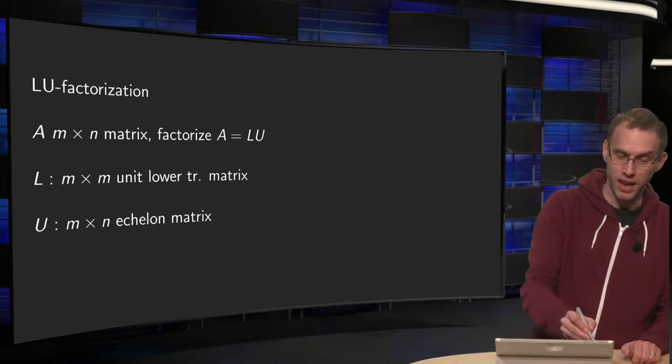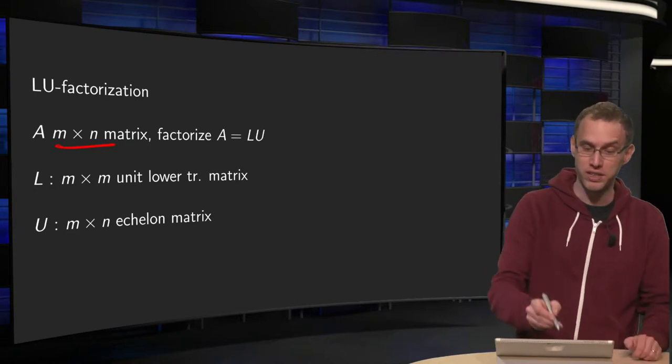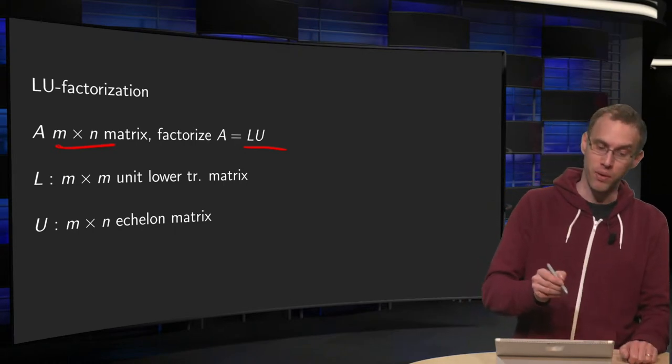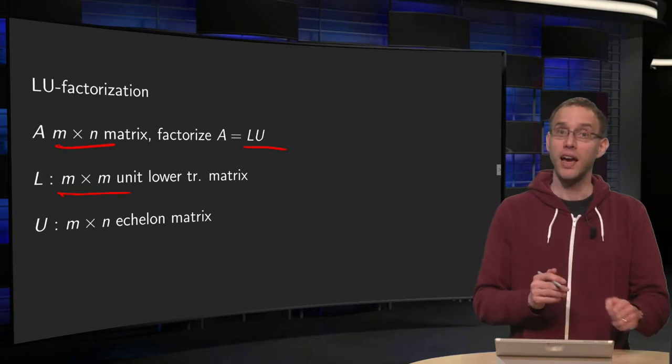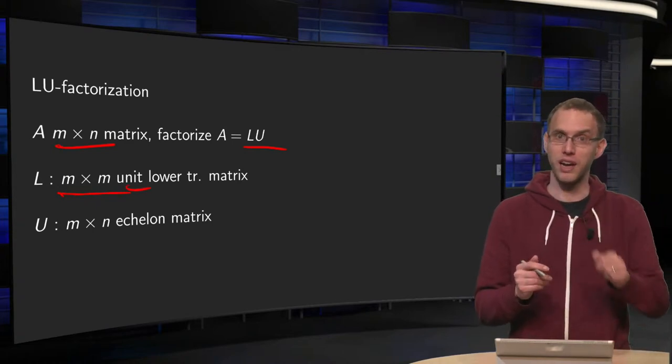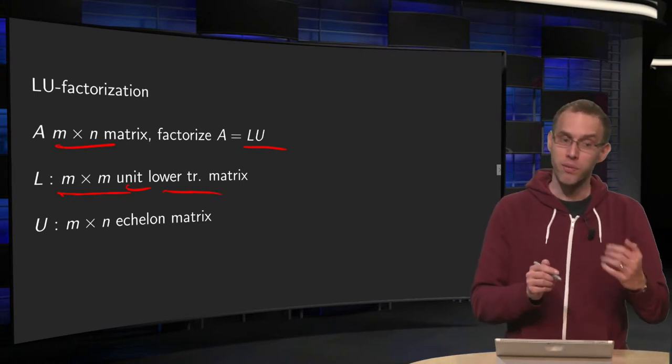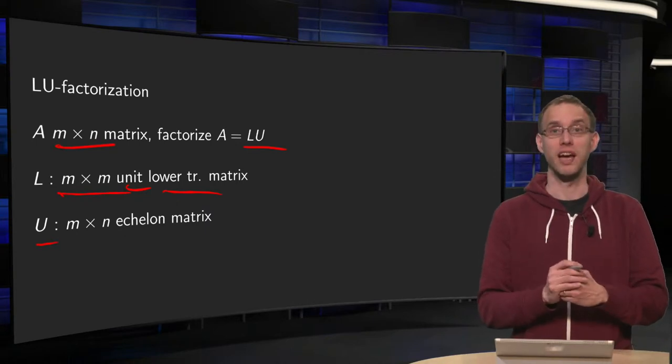So what is the idea? With an m times n matrix A, I want to write A as a product L times U, where L and U are matrices. L is a square matrix of size m times m, and it is a unit matrix, meaning ones on the diagonal, and a lower triangular matrix. Whereas U is an m times n matrix, and it is an echelon matrix of A.